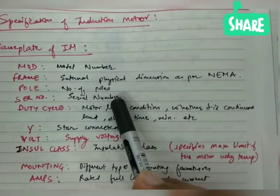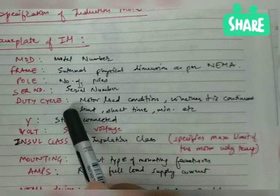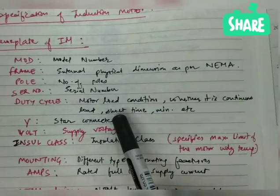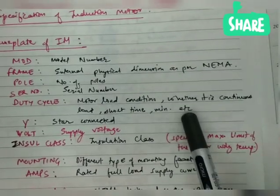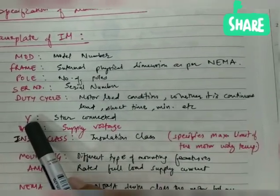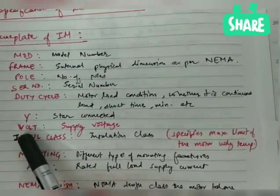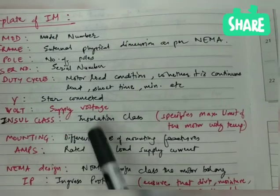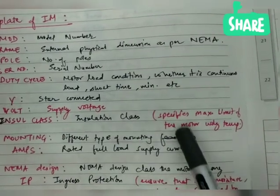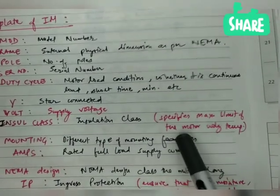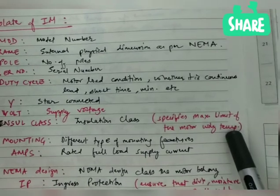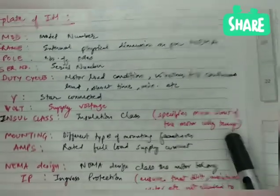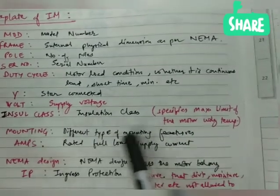Every motor has its unique serial number. Then duty cycle — duty cycle means the motor load condition, whether it is continuous load, short time, or minimum load, etc. Then star connected or delta connected, and the voltage which is the supply voltage. Next comes insulation class — what type of insulation class it is. It defines the specific maximum limit of the motor winding temperature, as insulation class is defined as per temperature.